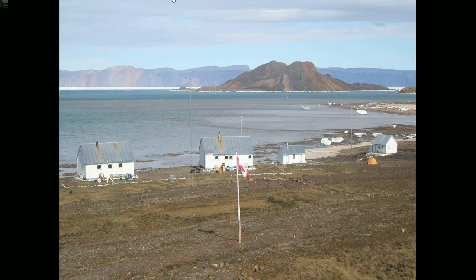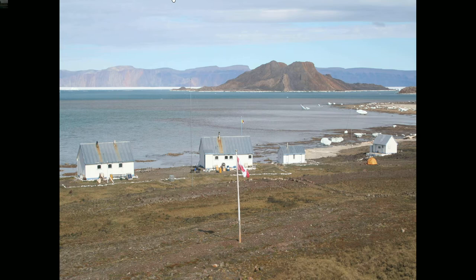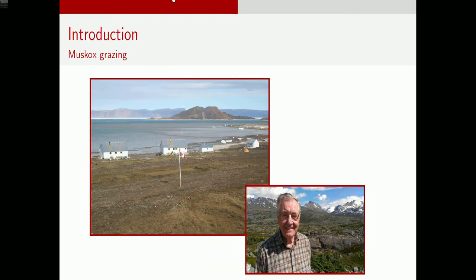Alexander Fjord was originally established by the RCMP in the 1950s for the purpose of Canadian sovereignty, because the High Arctic doesn't have many people and the Canadian government needed a presence there. After ten years as an active RCMP post, it became inactive, and was later taken up as a research station. The person who established it as an ecology research station was an alumnus of Masaryk University — Joseph Svoboda — who got Alexander Fjord going as a research site.